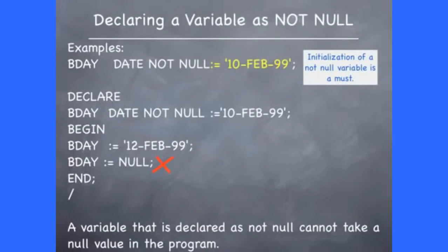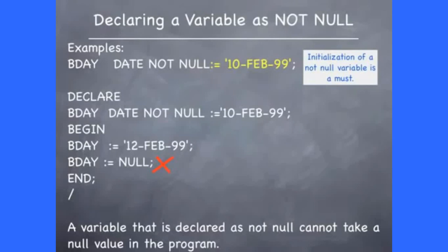When you declare a variable, you can associate it with a not null clause. This means that the variable being declared cannot take a null value in the program. In the example, the variable bday is created to be of date type and is identified as not null. An initial value of 10th of Feb 1999 has been assigned to bday, and this type of assignment is mandatory for a not null variable. In the body, the first assignment stores the value 12th of Feb 1999, but the second assignment where bday takes the value null will fail because bday has been declared to be of not null type.